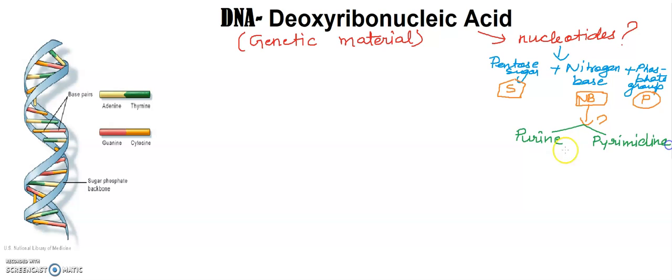Purines are adenine and guanine. There are two purines: adenine and guanine. And in pyrimidines there are two pyrimidines: number one cytosine and number two is thymine. So you don't have to write thiamine or vitamin D1.